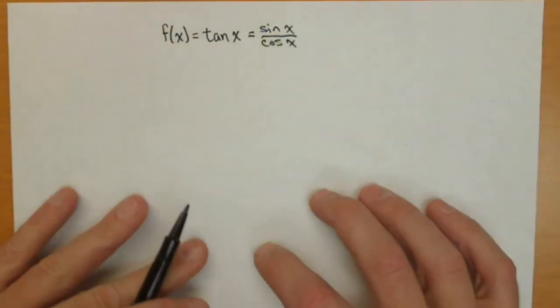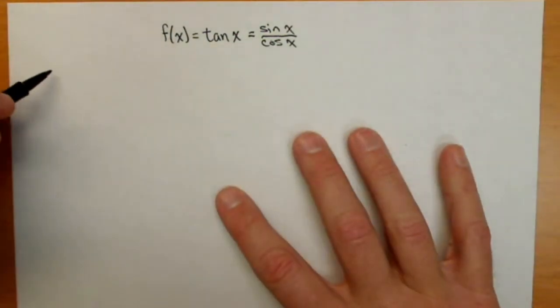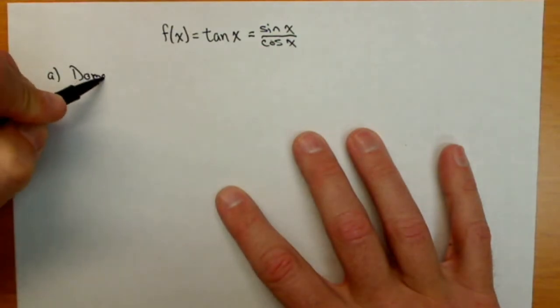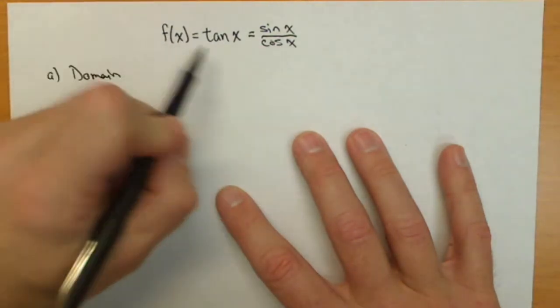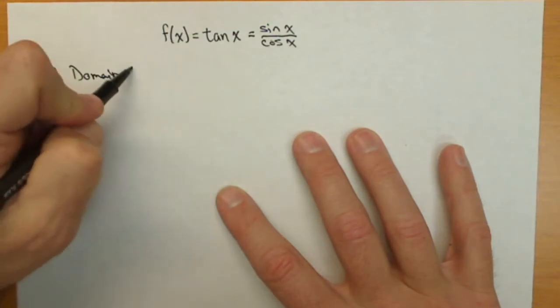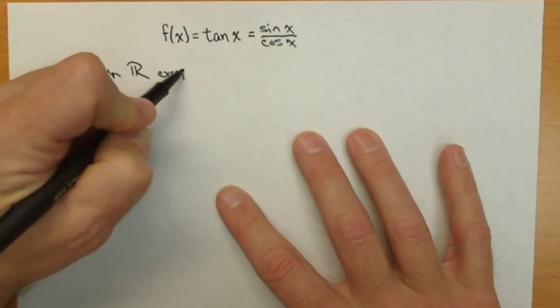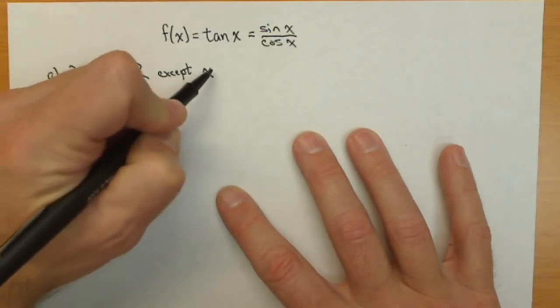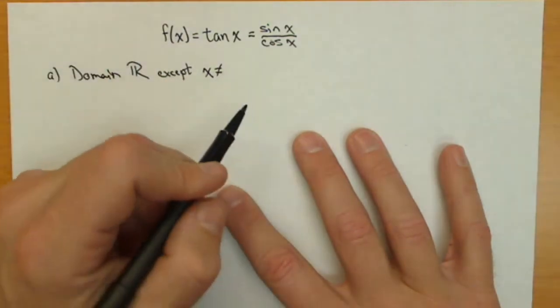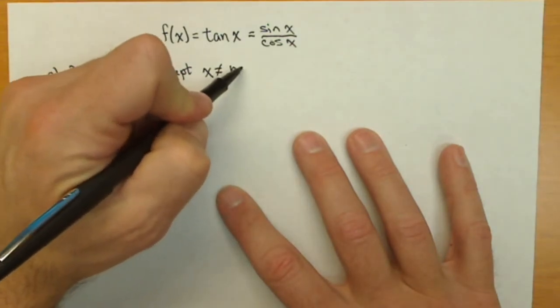We're going to use that fact to get this derivative. Also, remember that the domain of f(x), of tangent of x, is all reals except x cannot equal any integer multiples of π/2.